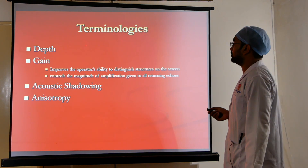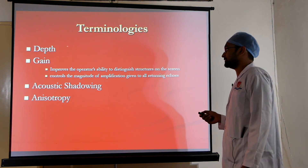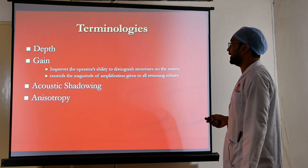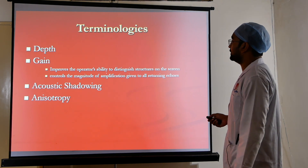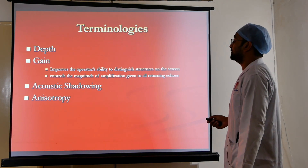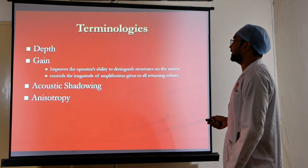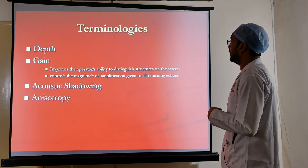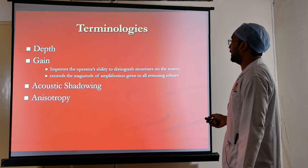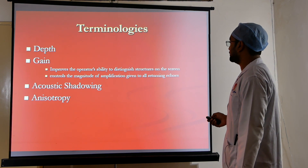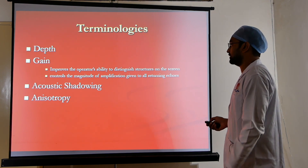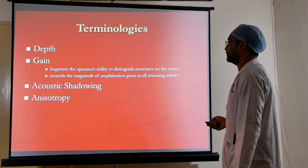Important machine terminologies: depth determines how much depth is visualized. Gain improves the operator's ability to distinguish structures on the screen by controlling the magnitude of amplification given to all returning echoes, which can improve our ability to distinguish structures. Additional phenomena include acoustic shadowing and anisotropy.